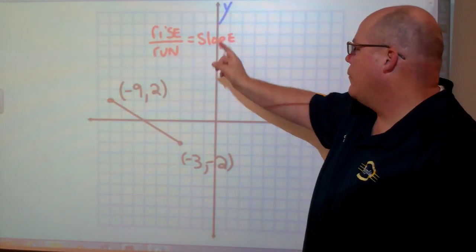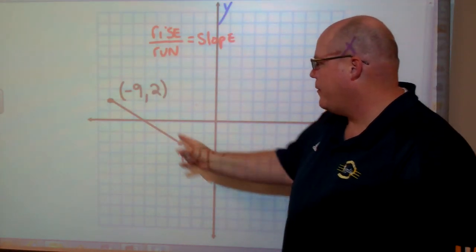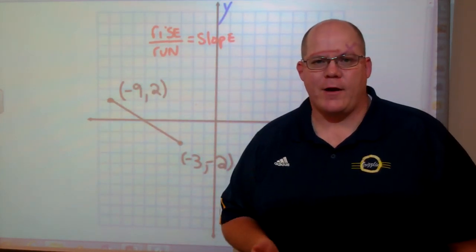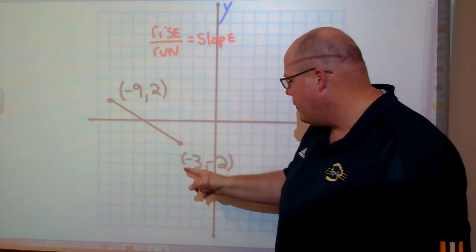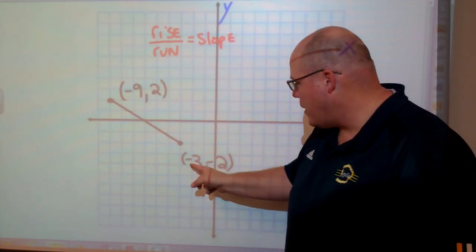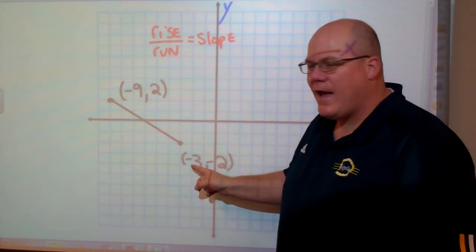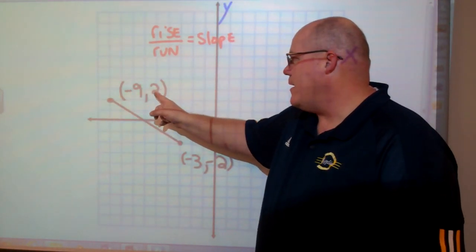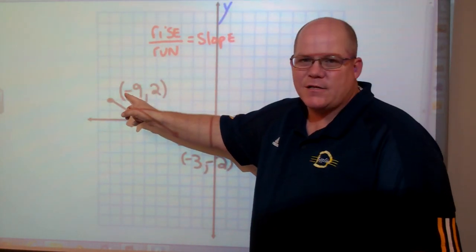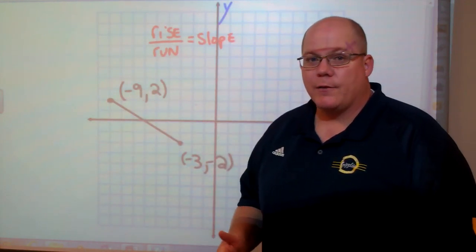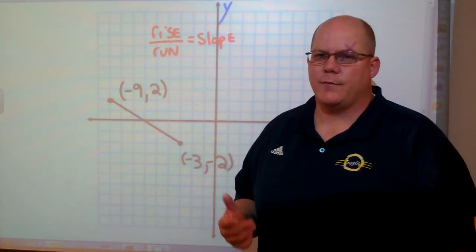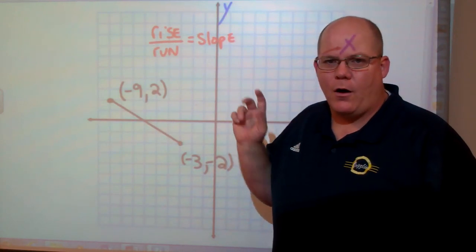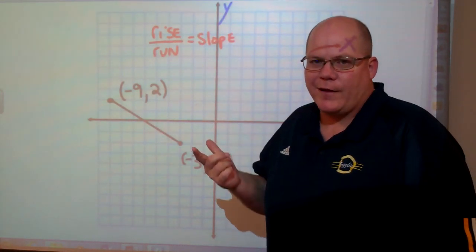So again, I'm using rise over run — I'm looking for the slope of a line. What I want to do first is find my rise. I'm starting at my lowest point. This is coordinate (-3, -2), where x is negative 3 and y is negative 2. And this is coordinate (-9, 2), where x is negative 9 and y is 2. So I'm going to rise first, then run. After I rise, I like to put the number down on paper so I don't forget it.